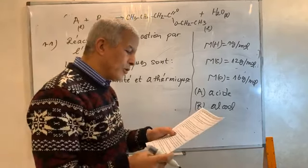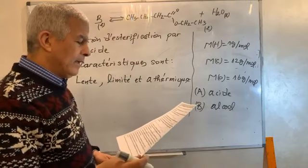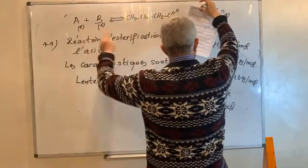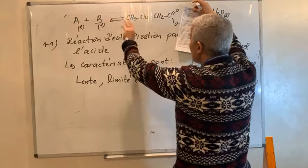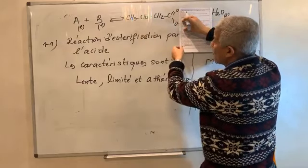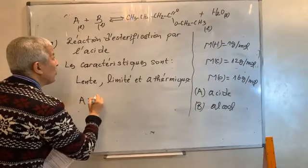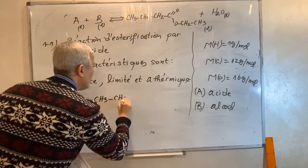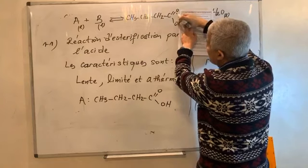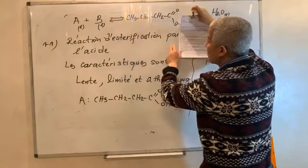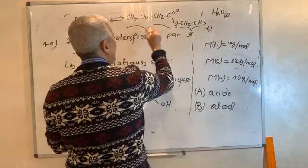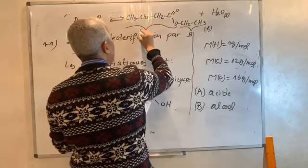Question 1.2 : indiquer la formule semi-développée de chacun des réactifs A et B et les nommer. Le réactif A est l'acide : c'est la partie gauche de l'ester. On ajoute simplement H, donc A a pour formule : CH3-CH2-CH2-C(=O)-OH. Cette partie représente le radical de l'acide, et l'autre partie est le radical de l'alcool.